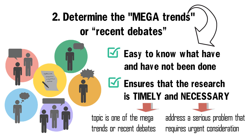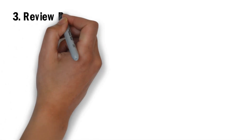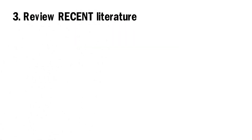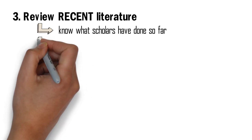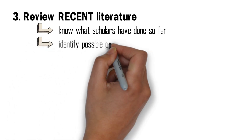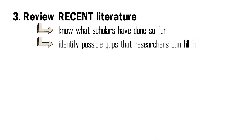This leads us to the third and last point. We need to review recent literature in our chosen area of specialization so we know what scholars have done so far. In this way, we will be able to identify possible gaps that we can fill in. For example, if one's discipline is anthropology and one is passionate about doing research on the indigenous peoples in Southeast Asia, then she needs to review literature on indigenous peoples in Southeast Asia in the last three to five years.